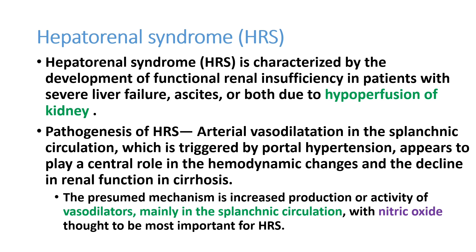It is mainly seen in severe liver disease with ascites, and is mainly due to hypoperfusion of the kidneys. There will be arterial vasodilation in the splanchnic circulation in chronic liver disease, which can be triggered by portal hypertension, and this plays a major role in the reduction of renal perfusion and renal function.